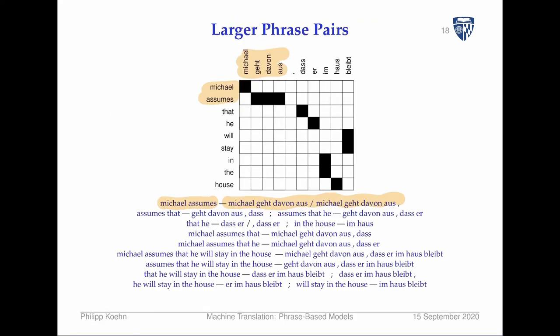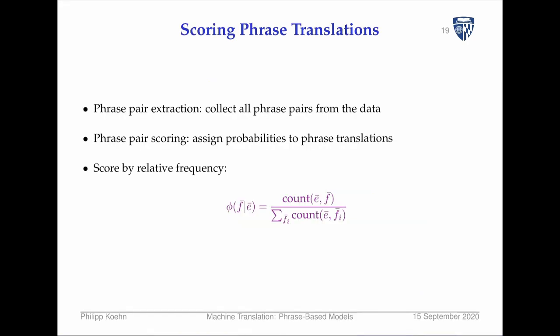We also get bigger and bigger ones. The question is where do you stop — do you want gigantic phrases? In practice there is limited benefit to really gigantic phrases, so you impose a word length limit of say seven or five words. You go over each sentence pair and extract all these phrase pairs.